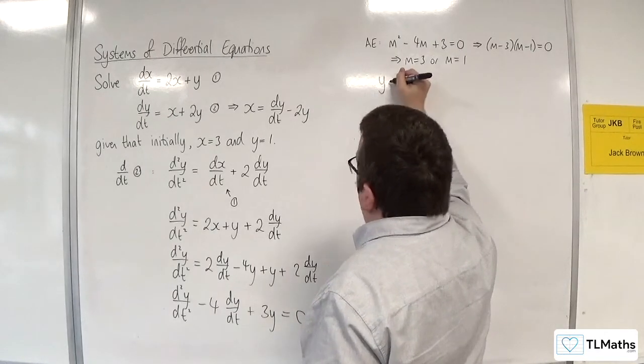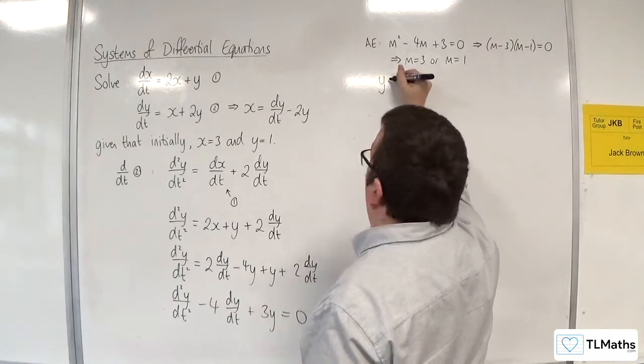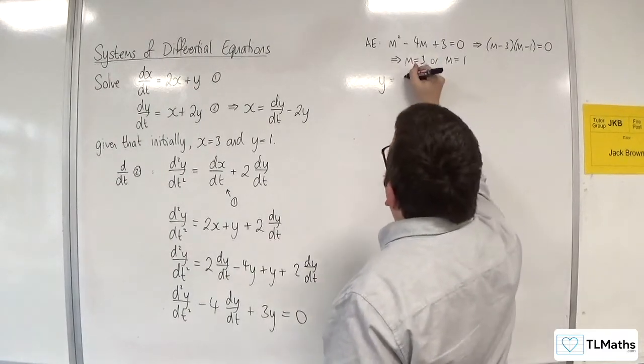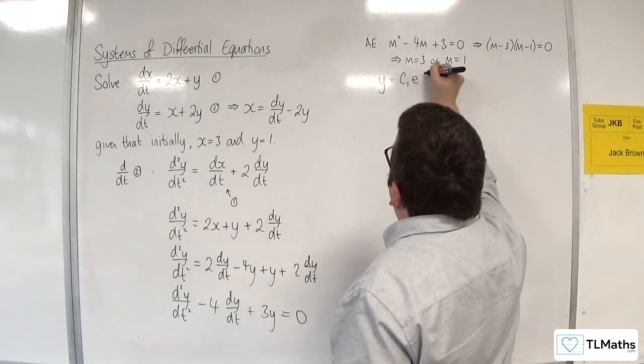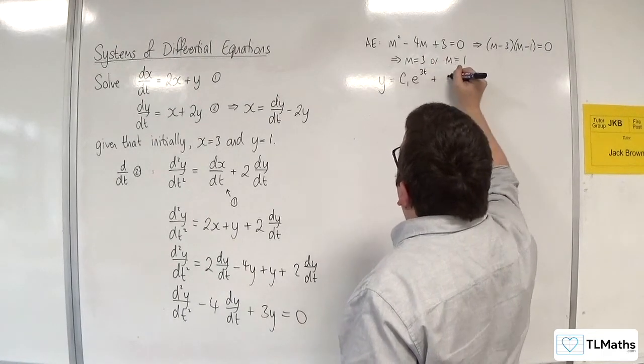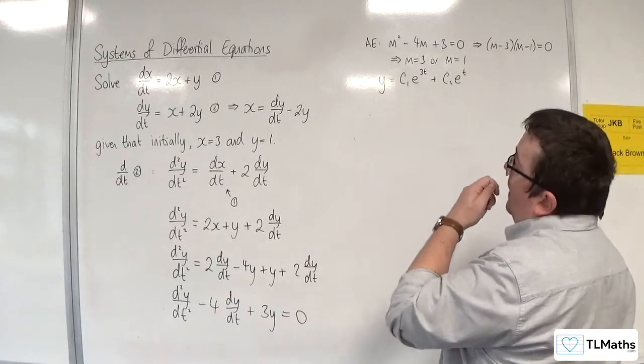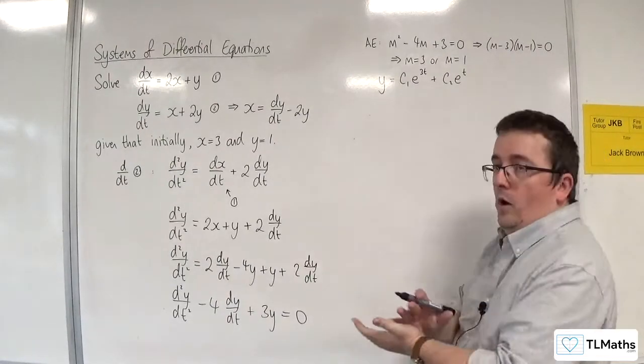So y is equal to c1e to the 3t plus c2e to the t. So that's my equation for y.